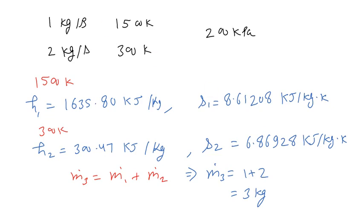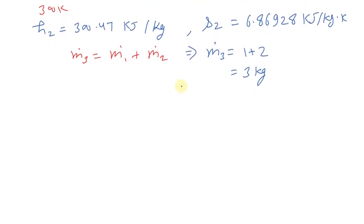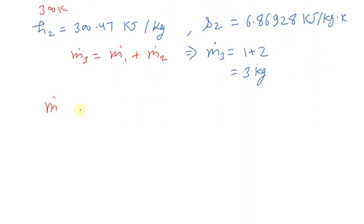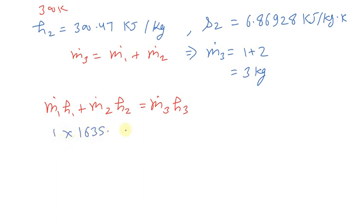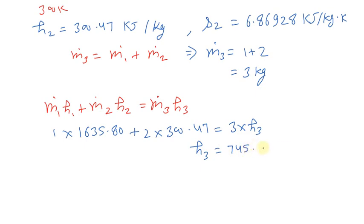Now let's write the energy equation for the mixing process. We can write M1-dot times H1 plus M2-dot times H2 equals M3-dot times H3. Substituting all the values: 1 × 1635.80 plus 2 × 300.47 equals 3 × H3. Solving further, we get H3 is equals to 745.58 kJ per kg.